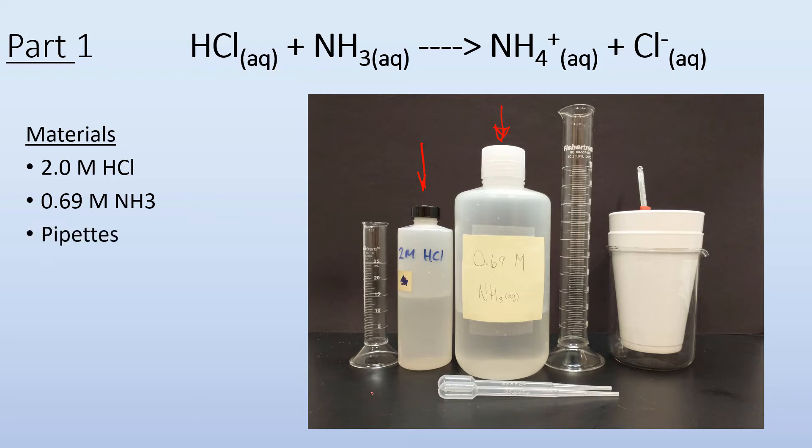You need some pipettes so that you can measure out finite volumes precisely, styrofoam cups to act as a calorimeter to insulate our system, graduated cylinders so that we can measure out given volumes of those two aqueous solutions, and a thermometer because we're going to be measuring some therms.